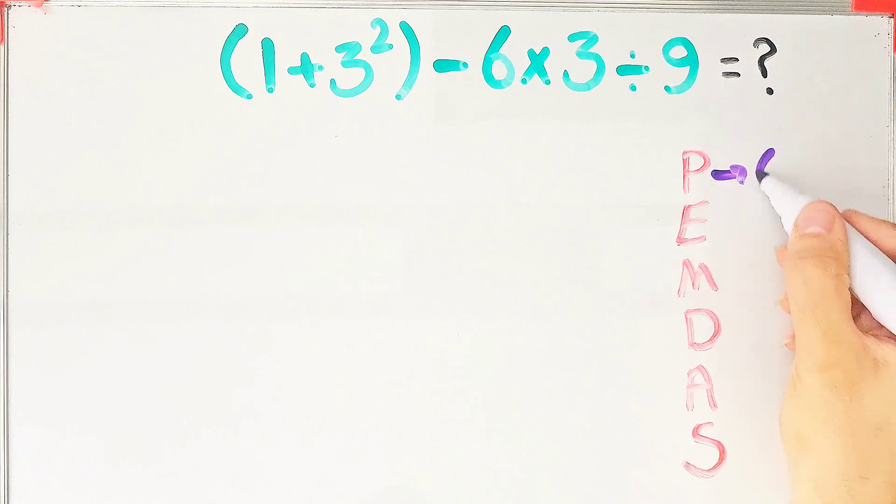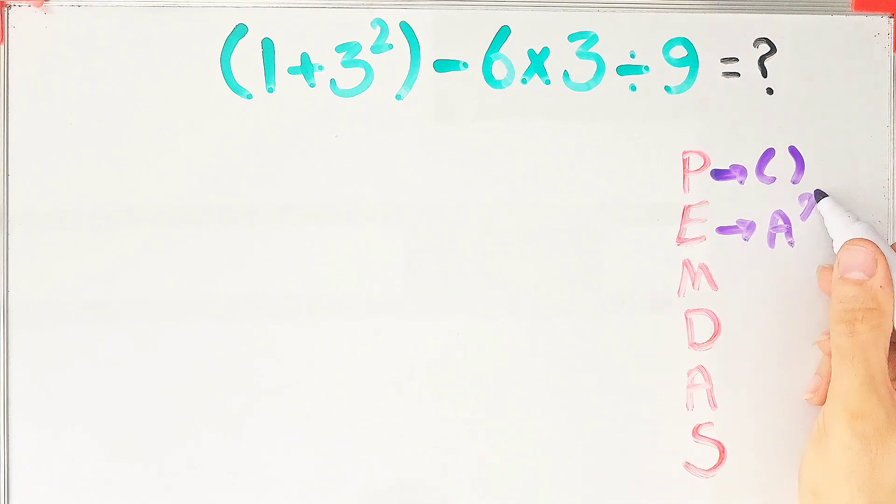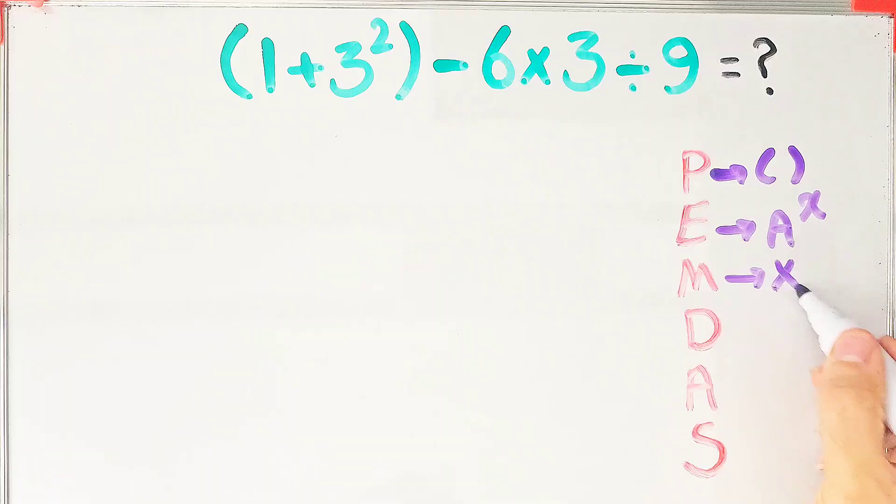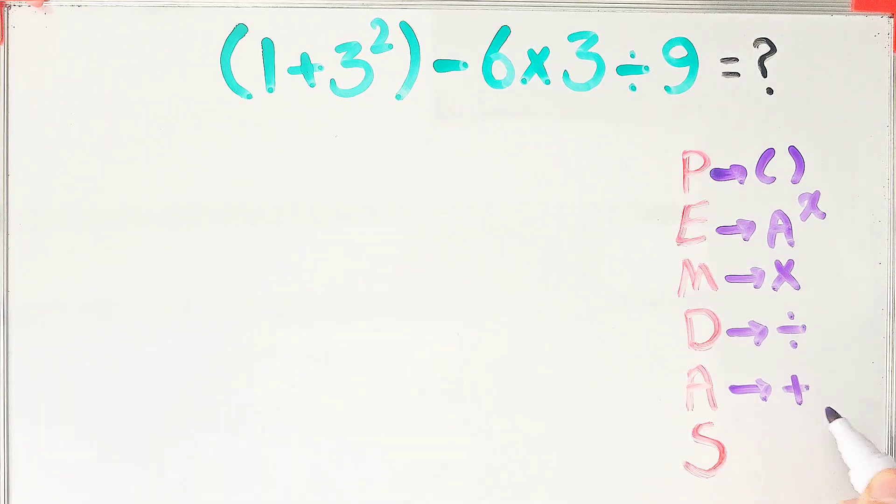In this rule, P stands for parentheses, E stands for exponent, M stands for multiplication, D stands for division, A stands for addition, and S stands for subtraction.